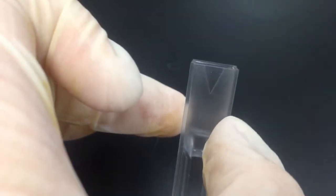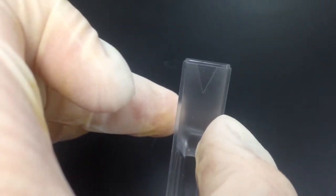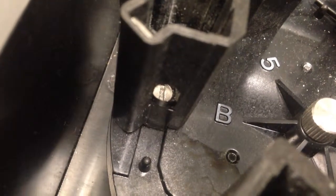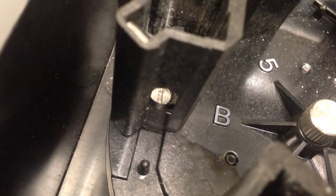Load the cuvette into the machine by aligning the rectangular arrow in line with the opening in the machine. This is where the wavelength of light will pass through.